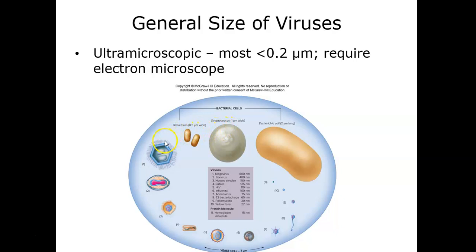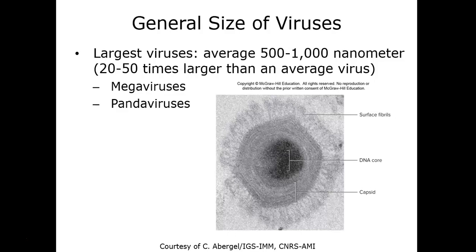These measurements are extremely small — we're talking nine zeros when you spell the whole thing out. We go all the way from something like a megavirus down to something like a hemoglobin molecule, which carries oxygen in your blood. These are incredibly tiny and can only be visualized using the electron microscope. The largest viruses average about between 500 and 1,000 nanometers, and we talk about things like the megaviruses and pandaviruses, which are much larger than some typical viruses we know of.